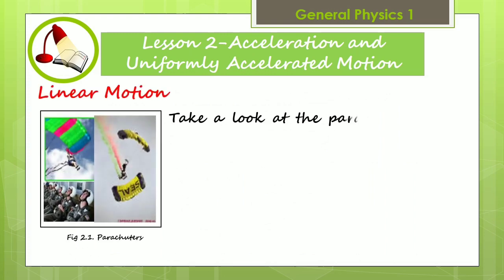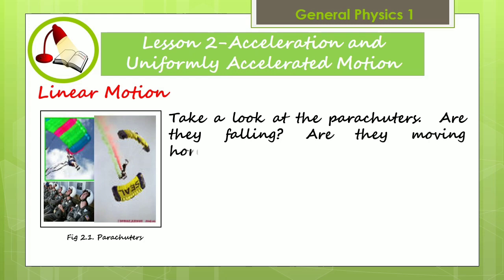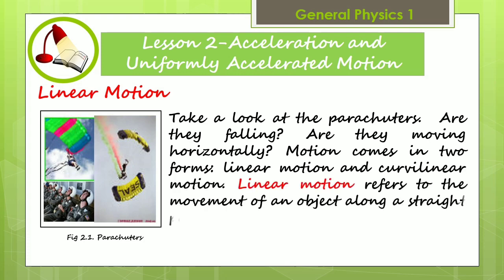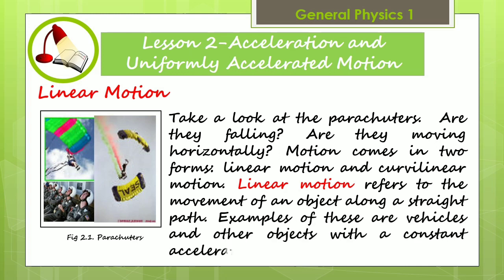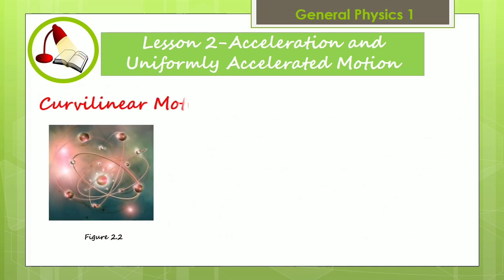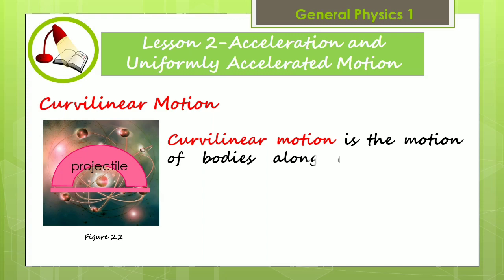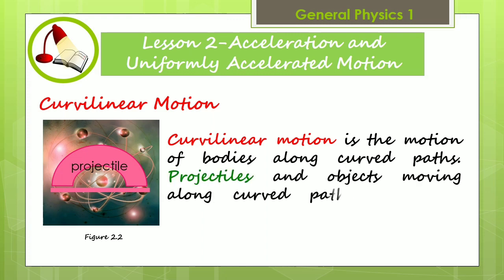Take a look at the parachuters. Are they falling? Are they moving horizontally? Motion comes in two forms: linear motion and curvilinear motion. Linear motion refers to the movement of an object along a straight path. Examples of these are vehicles and other objects with constant acceleration and free fall. Curvilinear motion is the motion of bodies along curved paths. Projectiles and objects moving along curved paths are some examples.